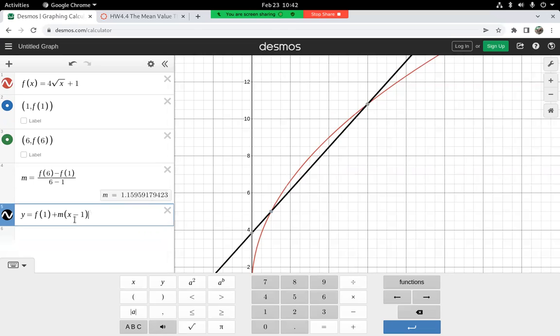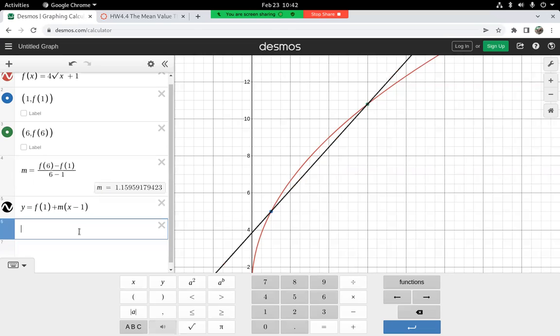Now we just found an x value. I'm going to call that one a like I did in my notes. That is the place where a tangent line has that slope in between these two points. So let's find that.